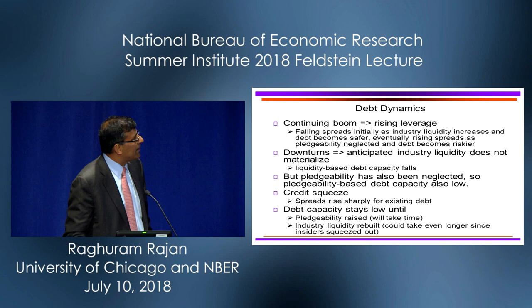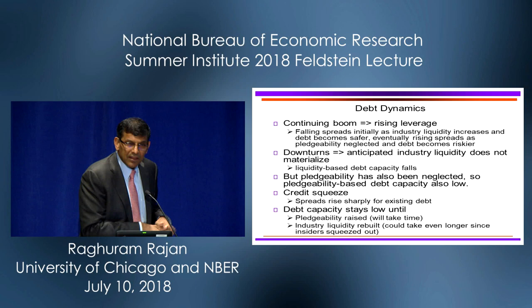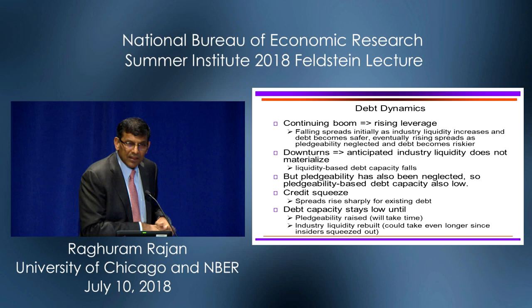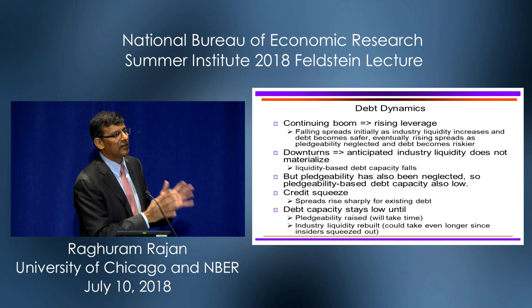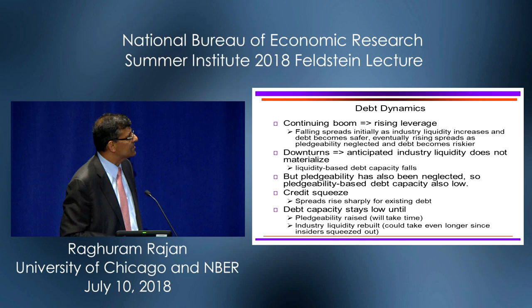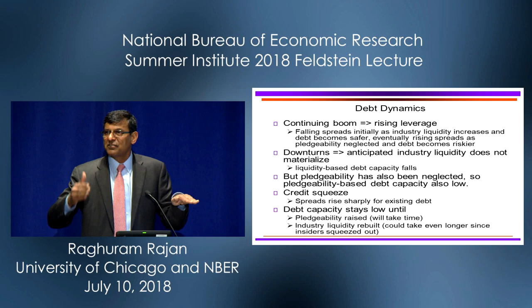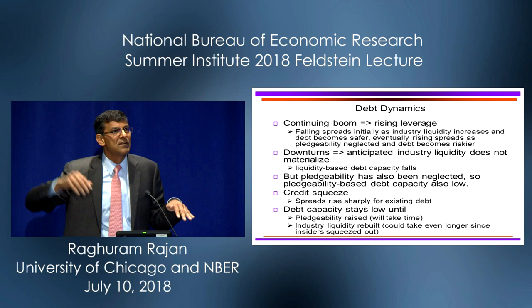A continuing boom is rising leverage, because we know that leverage can be supported by the availability of tremendous liquidity — the asset can be sold for a lot, and that debt can be repaid. It means falling spreads initially as industrial liquidity increases and debt becomes safer. But eventually, because pledgeability is neglected, you will see spreads starting to increase before the crisis because the debt taken on is riskier.